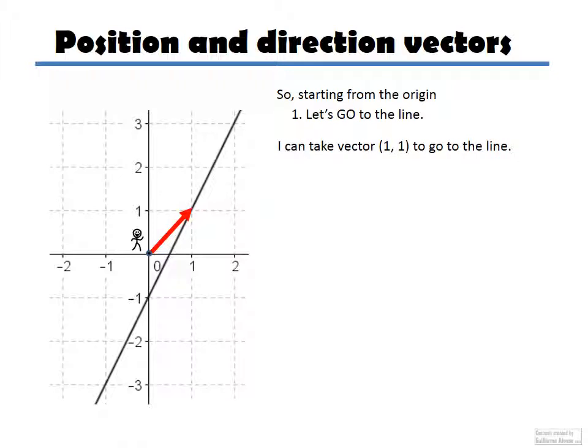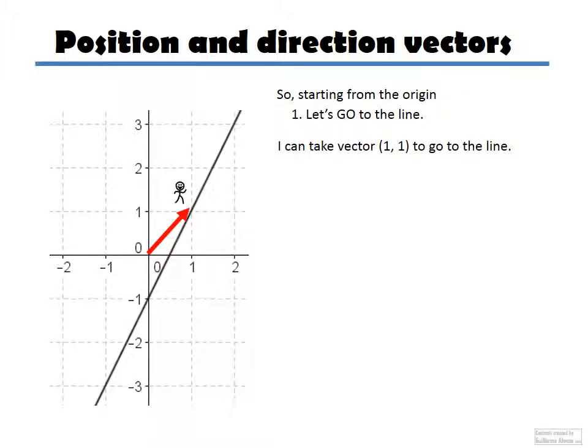What do we do? We took vector (1, 1). That's the vector that took us to the line. There we are. We made it to the line. Great.